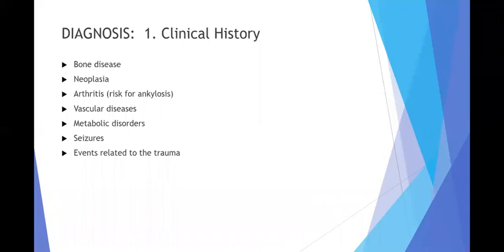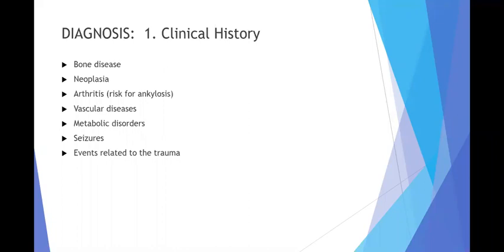This fracture line is caused by impact over the same side of the mandible between the canine and second molar region, or violence on the chin on the opposite side. In clinical history, we need to ask about bone disease, neoplasia, arthritis — which leads to risk of ankylosis — vascular diseases, metabolic disorders, seizures, and events related to the trauma. A helpful mnemonic is AMPLE: Allergy, Medication, Past Illness, Last meal, and Events related to the injury.